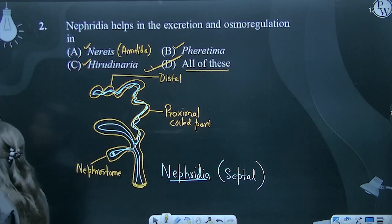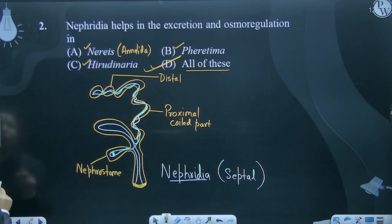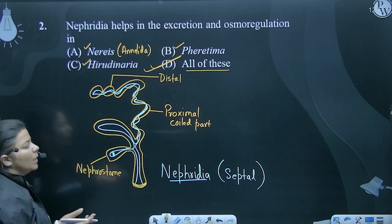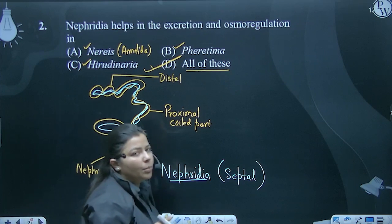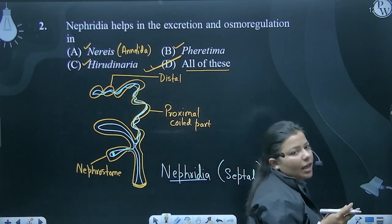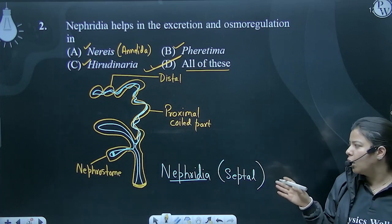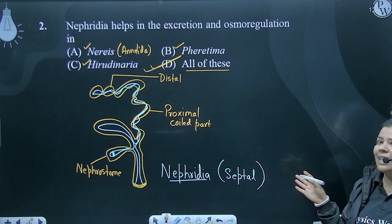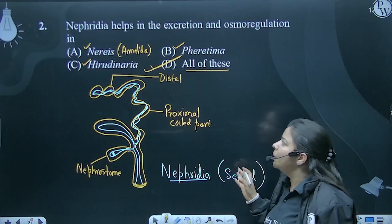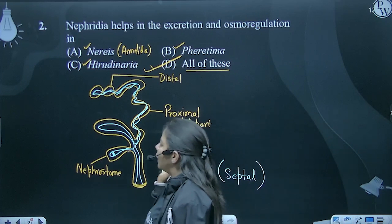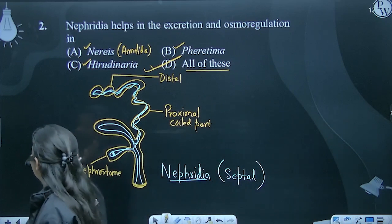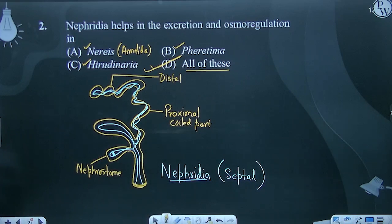Because nephridia exists in the form of septal nephridia. The types are proto nephridia and septal nephridia. Proto nephridia is a broader term and septal nephridia is a specific term used for the Annelida phylum. So Nereis, Hirudinaria, and Pheretima — all three belong to Annelida. Therefore, all of these is the correct answer for question number two.